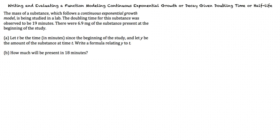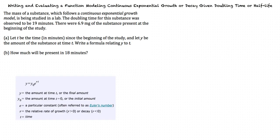Let's look at the model of how we solve these problems. y equals y sub 0 times e to the power of r times t, where y is the final amount, y sub 0 is the initial amount, e is a constant, r is the rate of growth or decay, and t is the time.